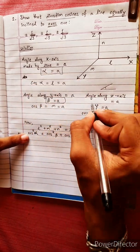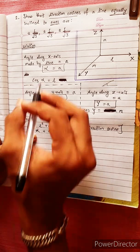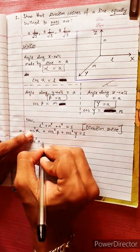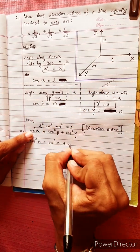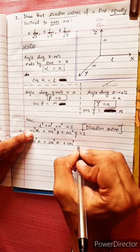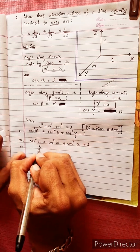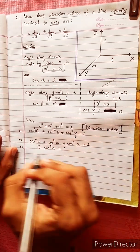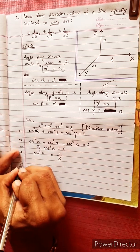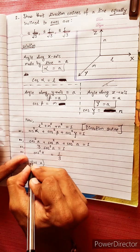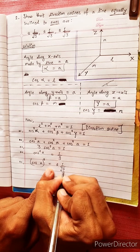Since alpha equals A, beta equals A, and gamma equals A, we substitute: cos squared A plus cos squared A plus cos squared A equals 1. That gives 3 cos squared A equals 1, so cos squared A equals 1 by 3.